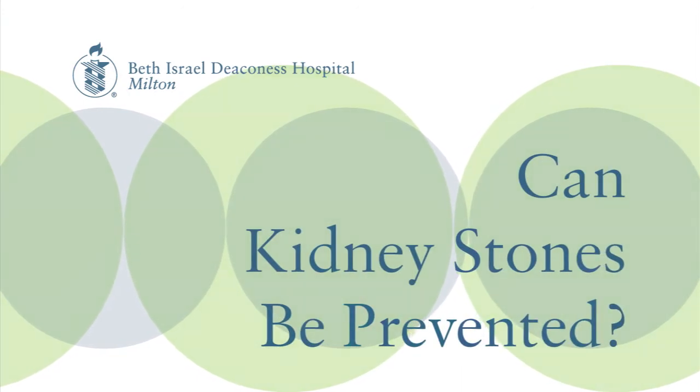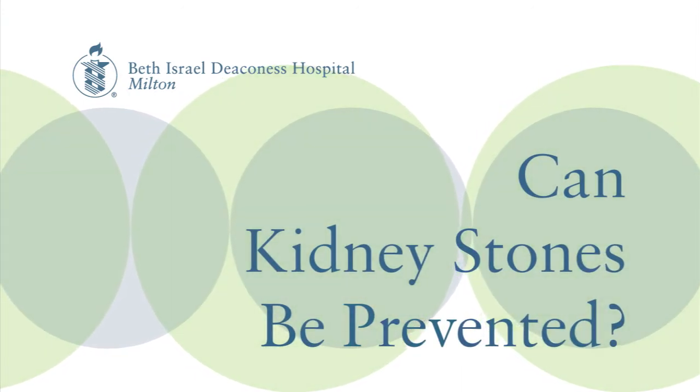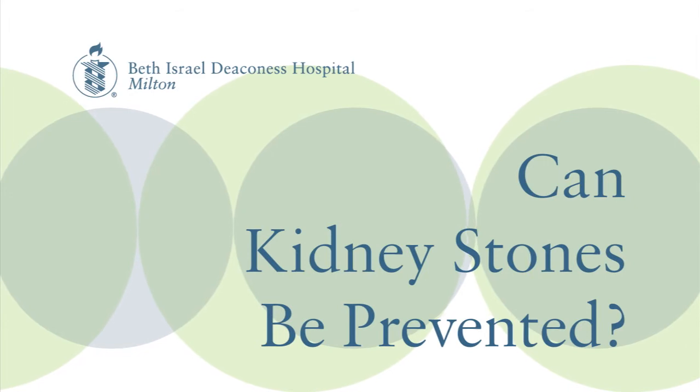Probably the most important thing for prevention is hydration. We usually recommend that patients drink more than two liters of water a day. It goes back to the idea of the stones acting as crystals — the more fluid you drink, the more dilute the urine, and that helps prevent the stones from forming in the first place. Other general guidelines are to decrease protein in the diet as well as to decrease the amount of oxalate that you eat.